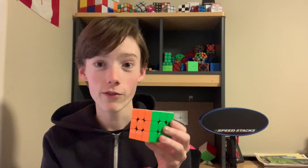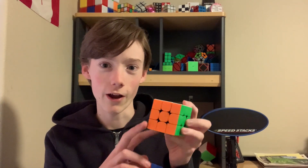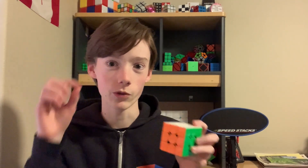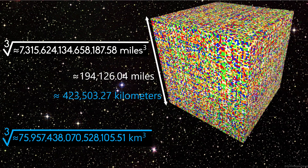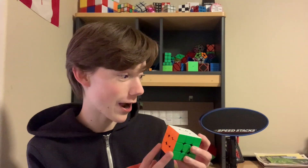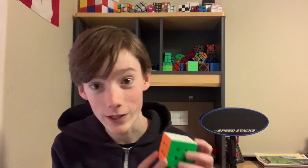These numbers are huge. We have the volume of the giant cube. I want to find out how long one of the side lengths of this huge cube is going to be. So we take the cube root of seven quadrillion cubic miles, and we get a single side length of 194,126 miles plus 209 feet and 5.5 inches. But I'm just going to round that to 194,126 miles.